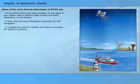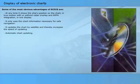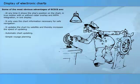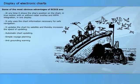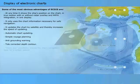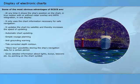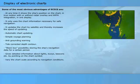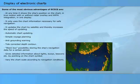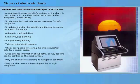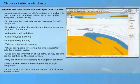It updates the chart by satellite and thereby increases the speed of updating. Additional advantages include: automatic chart updating, simple voyage planning, anti-grounding warning, tide-corrected depth contour, black box possibility storing the ship's navigation data for a certain period, detailed information about lights, buoys, beacons, etc. by pointing on the chart symbol, varying the chart scale according to navigation conditions, varying the chart colours depending on day or night navigation, and showing the ship in true size in narrow and difficult areas and conditions.